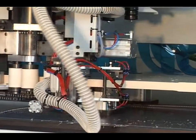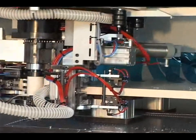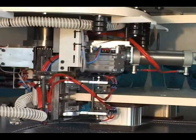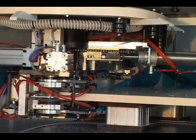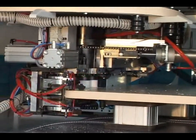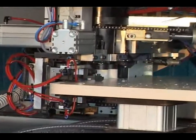The Vector Revolution 180 utilizes the principle of simultaneous processing, with the tape feed, gluing and application, as well as the trimming and surface scraping all performed in the same cycle.